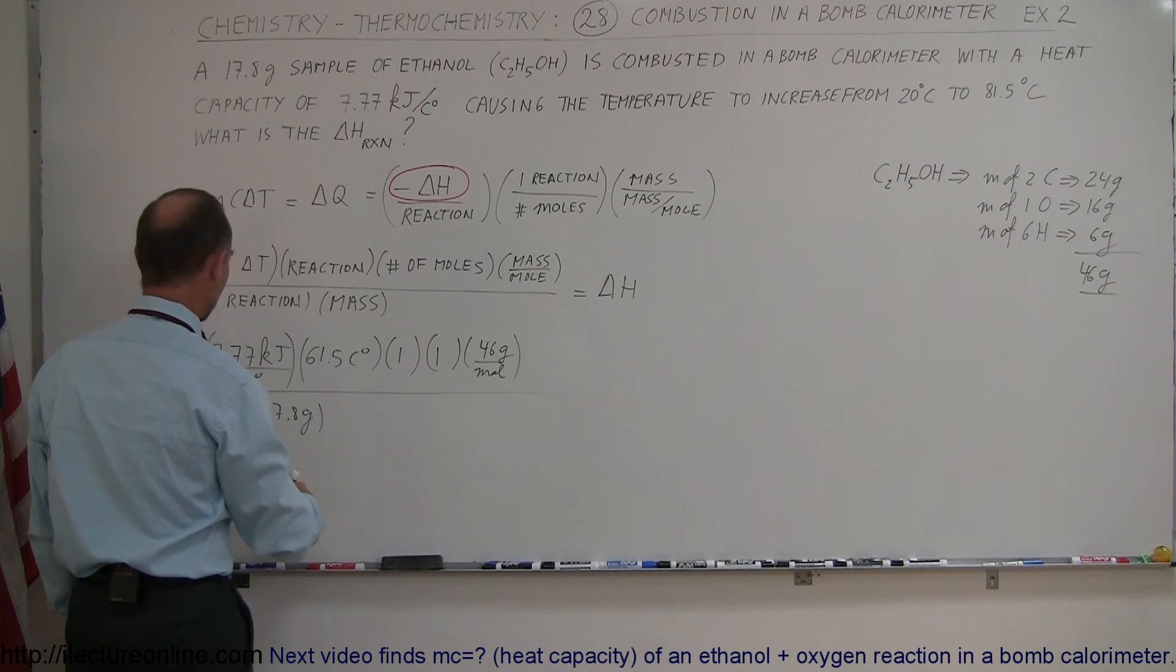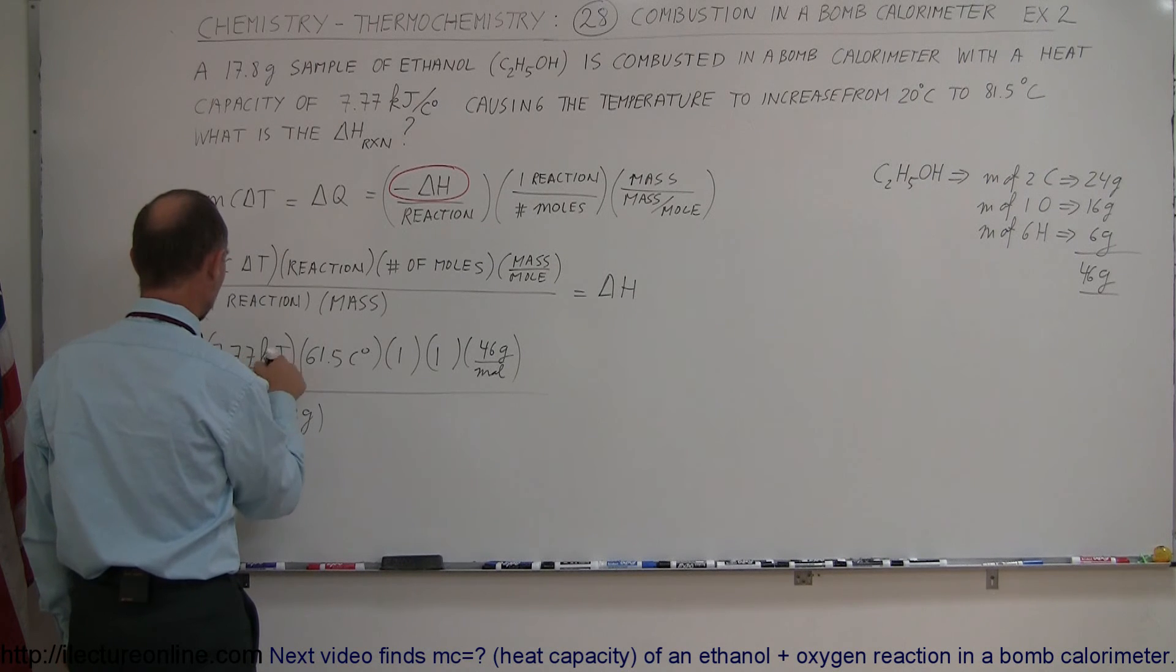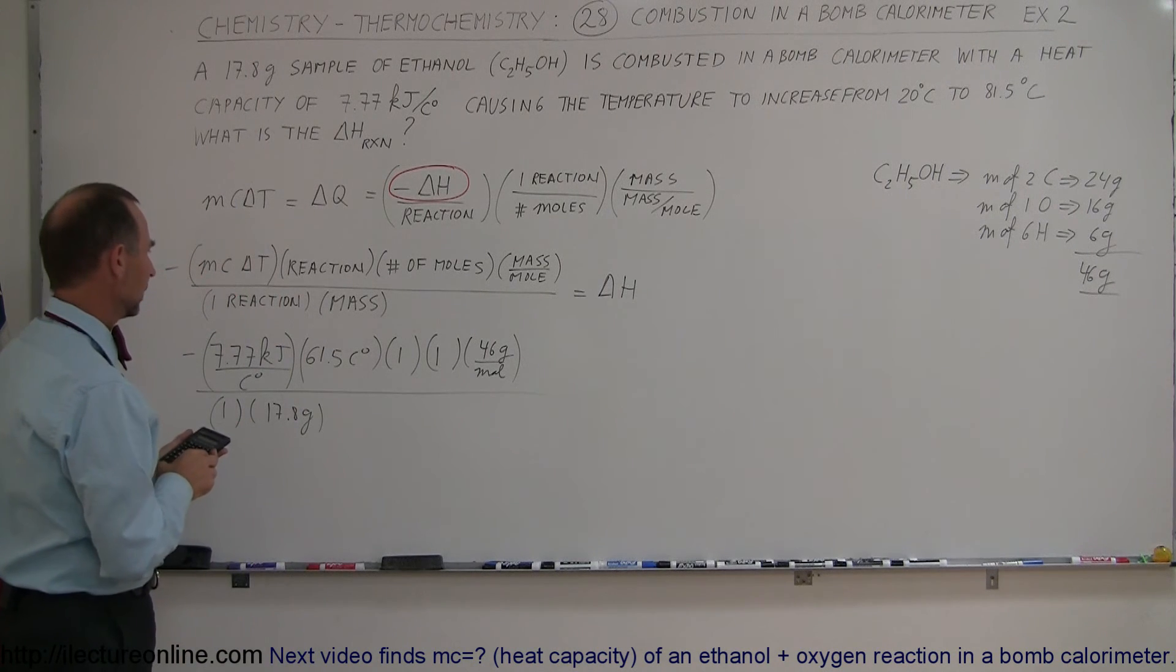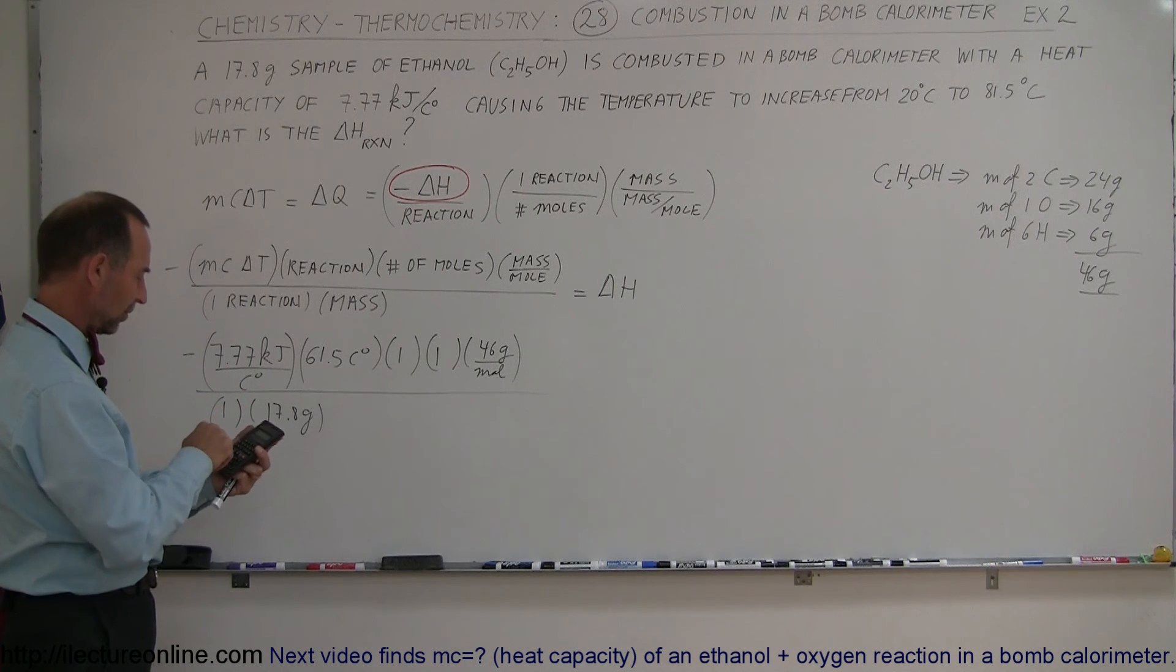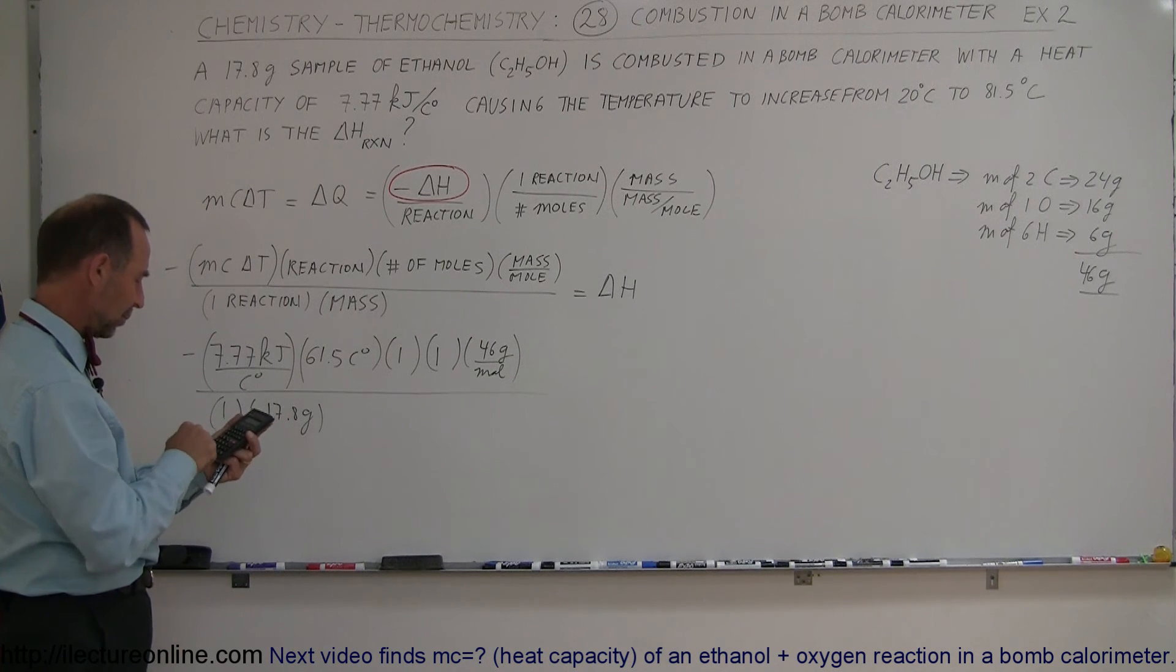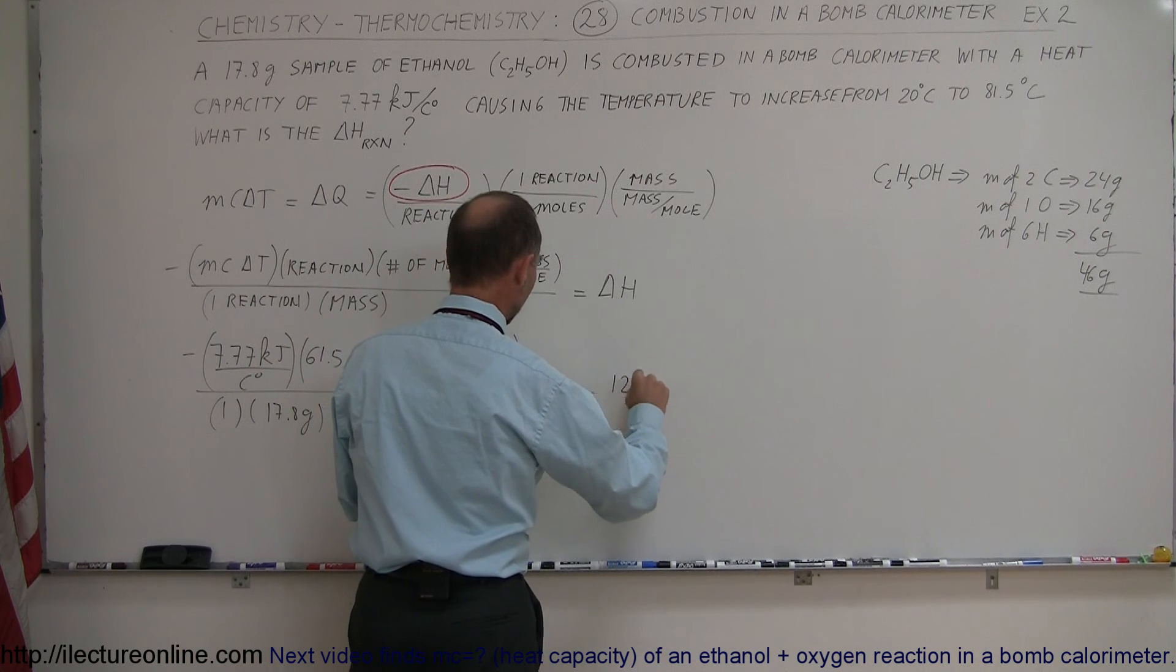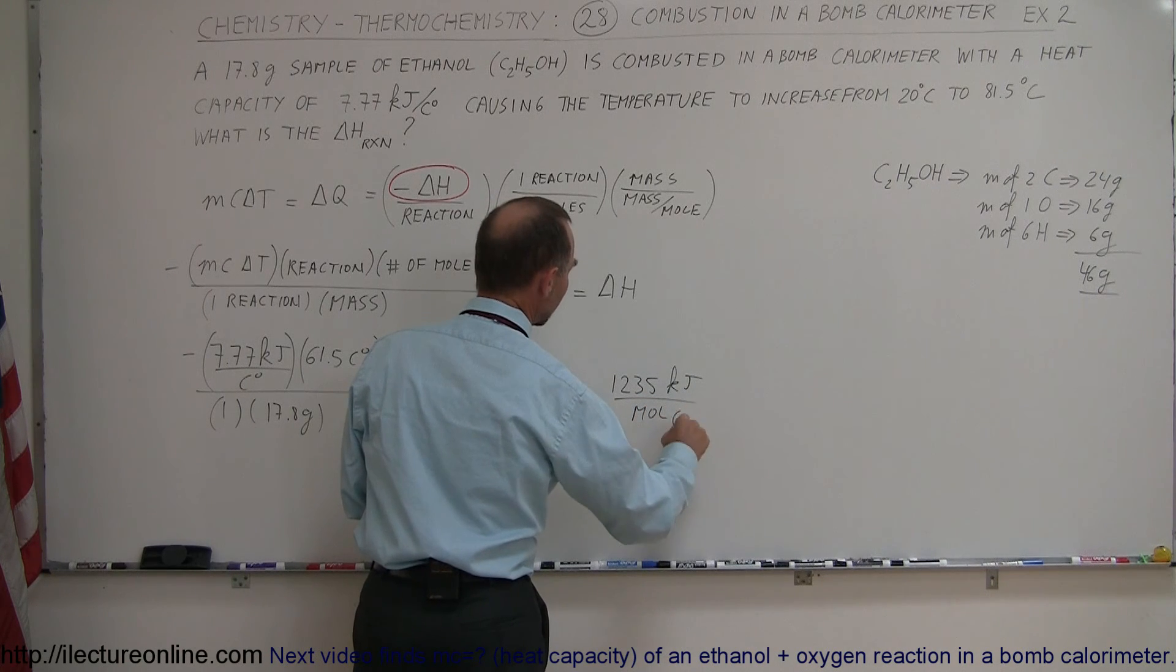Notice grams cancel out, moles will cancel out, so we end up with kilojoules per mole or per reaction. Let's work this out. 7.77 times 61.5 times 46, and divide by 17.8, and that gives me a total of minus 1,235 kilojoules per mole or per reaction.